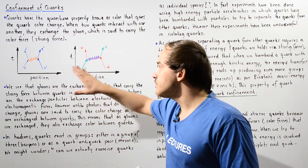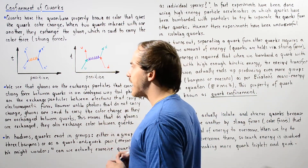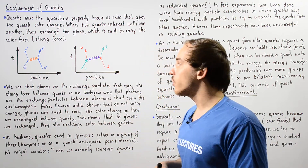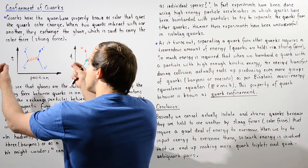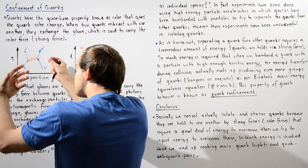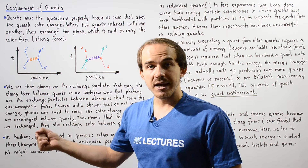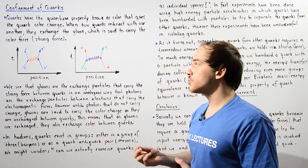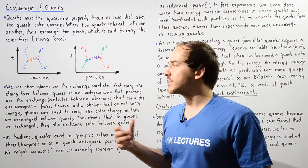These two Feynman diagrams basically describe graphically how the interactions actually take place. When two electrons approach one another, eventually one of those electrons will emit or release a photon, also known as a virtual photon, because it cannot actually be observed experimentally.